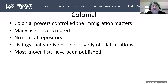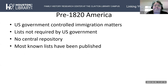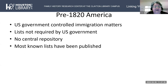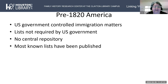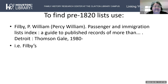Most known colonial lists have been published, so if someone found a colonial era passenger list, most have been published and are findable. Covering pre-1820 America, the U.S. government controlled immigration matters from the end of the Revolutionary War through 1820, but was still not requiring lists to be kept. Any lists that exist also have no central repository, though some known lists have gone to the National Archives. Most known lists have also been published.